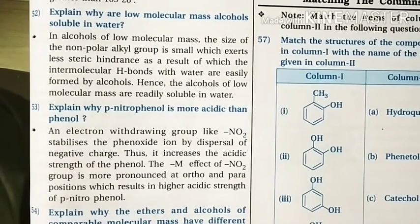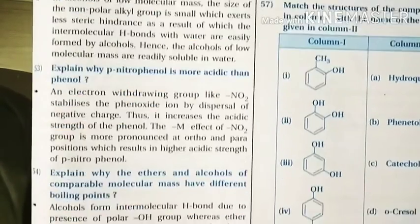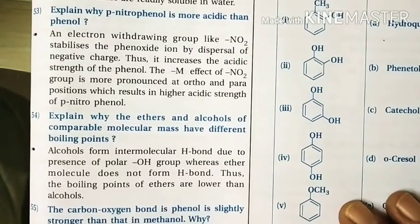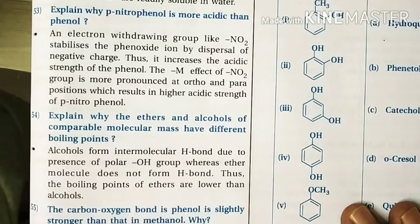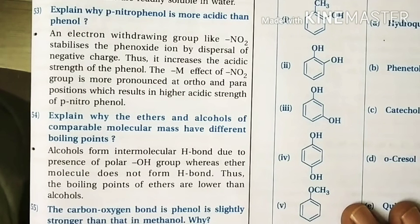Question 53: Why is para-nitrophenol more acidic than phenol? Due to the negative inductive effect and negative resonance effect of the nitro group, the electron density in the OH bond decreases relative to the OH group in phenol. Therefore, para-nitrophenol is much more acidic than phenol.